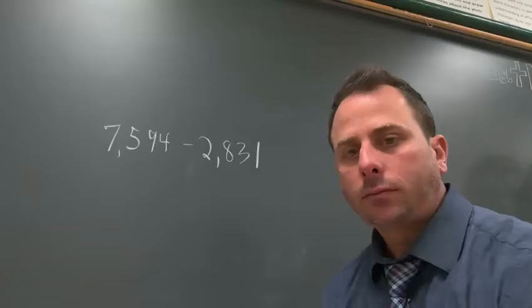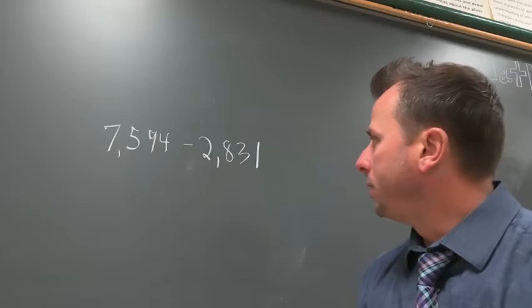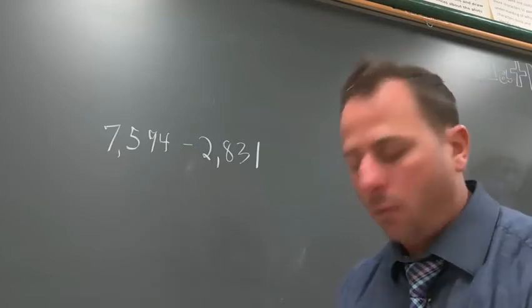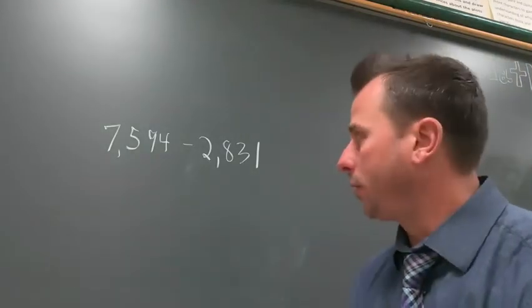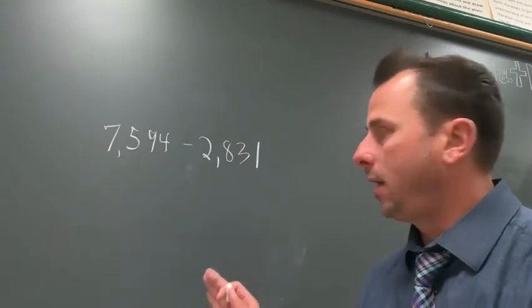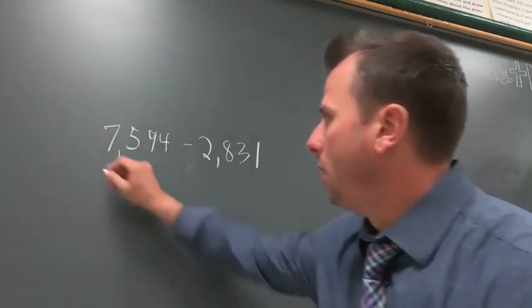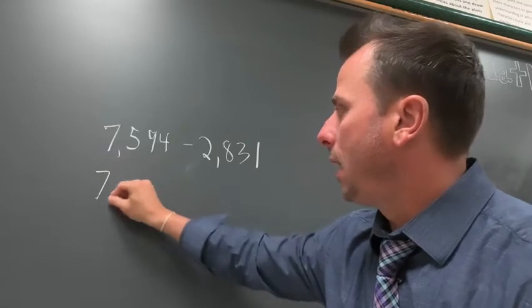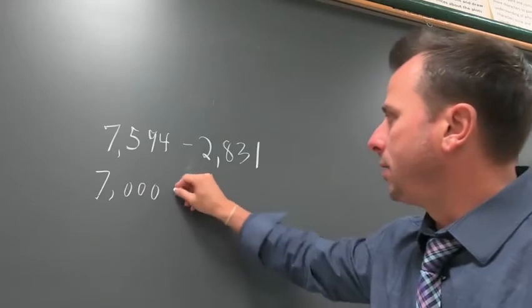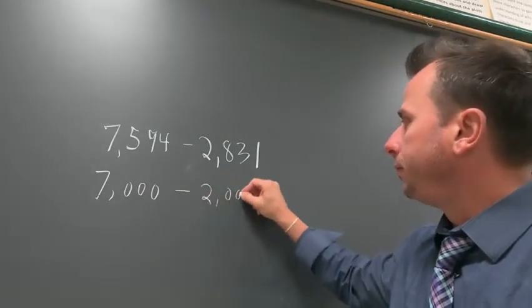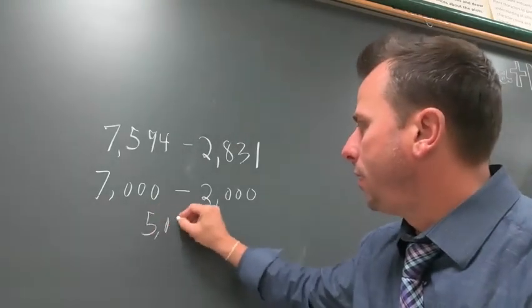Let's take a look at our first example: 7,594 minus 2,831. The first thing you're going to do is the front-end estimation strategy we learned yesterday. You just take the first digit, the seven, and then everything else will lump off as zeros. So 7,000 minus 2,000, as you guys know, is 5,000.